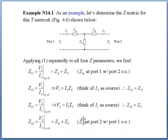Let us see this example. Please determine the Z matrix for this T-network. You have port 1 with V1 and I1, and port 2 with V2 and I2. By applying the first equation repeatedly to all four Z parameters, we find that Z11 equals V1 over I1. Because port 2, I2 equals 0, your port 2 is open circuit. That's why Z11 equals ZA plus ZC.